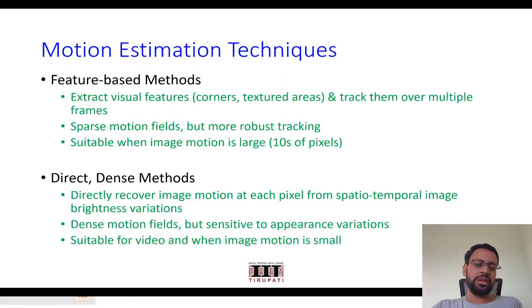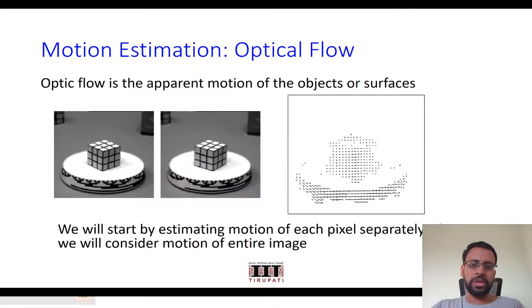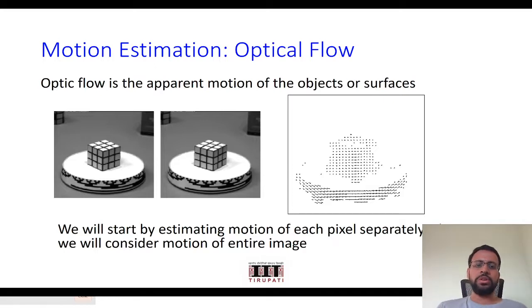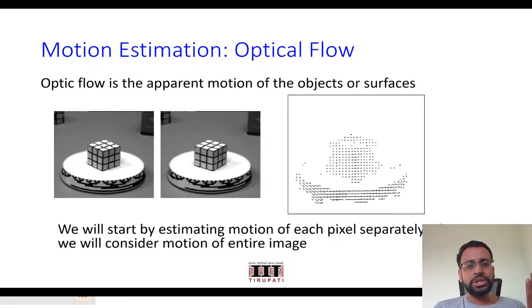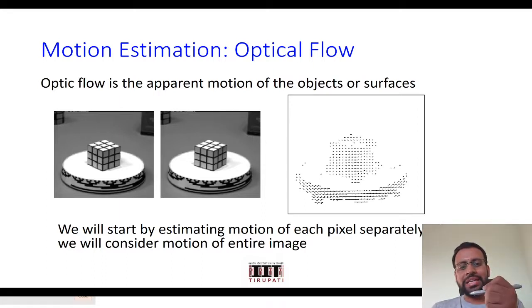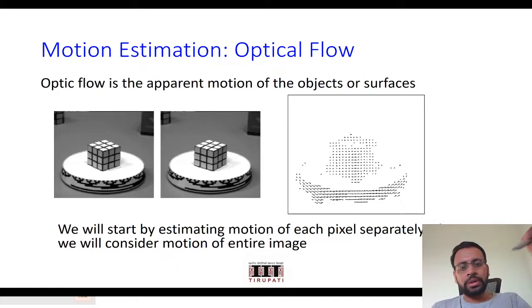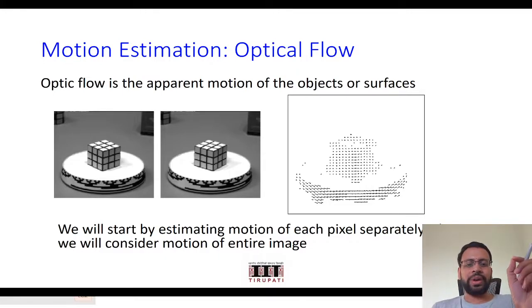Here is an example for motion estimation. For optical flow, for each pixel you find the corresponding intensity mapping in the consecutive image, which gives you the direction and magnitude of movement — both in x and y — for that pixel.